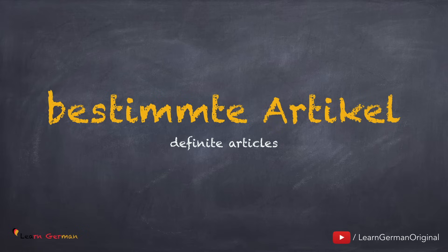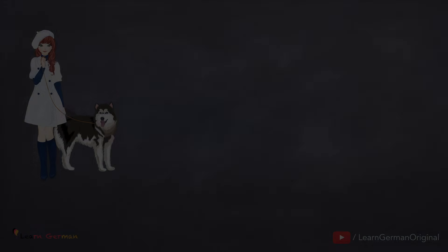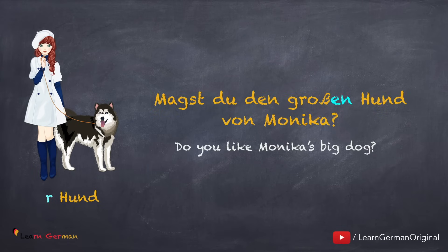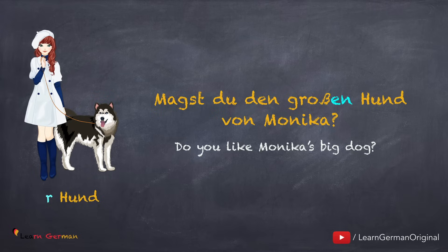Bestimmte Artikel. Hier ist das Beispiel für Maskulin: Magst du den großen Hund von Monika? In diesem Satz ist der Hund Akkusativ-Objekt, deshalb den Hund, und mit Adjektiv sagt man den großen Hund. Das Adjektiv bekommt die Endung -en von dem Artikel den. Hier ist die Endung genauso wie bei dem unbestimmten Artikel.